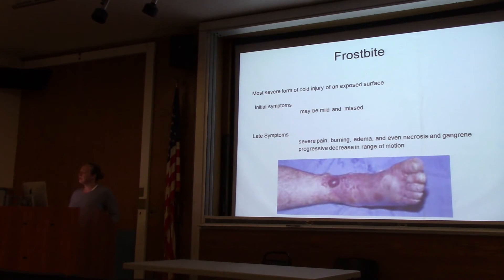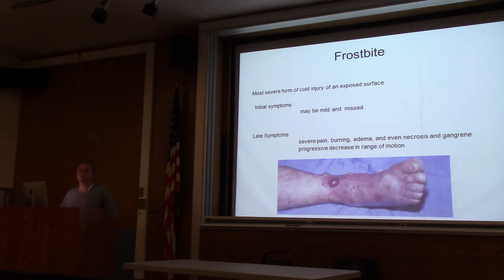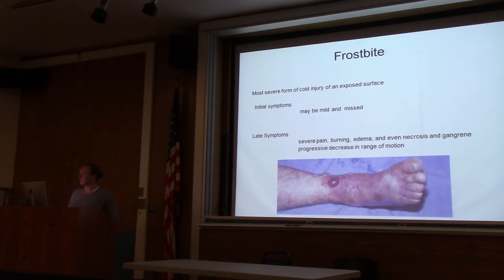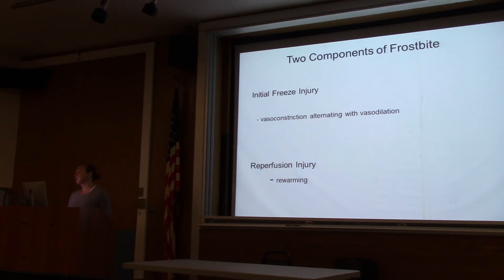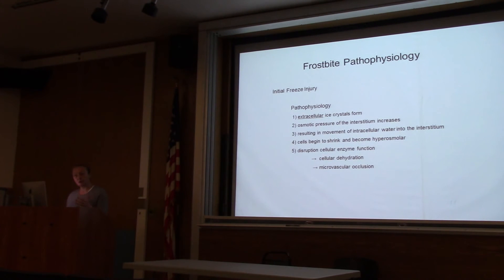Frostbite is the most severe form of cold injury to an exposed surface. The initial symptoms can be mild and overlooked. The later symptoms are severe: intense pain, blistering, edema, and necrosis of the distal extremities. The last thing you want to do is early debridement — wait several days to see where the patient demarcates, and do amputation only if necessary.